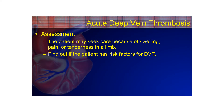A patient with a DVT may seek care because of swelling, pain, and tenderness in the limb. Find out if the patient has risk factors for DVT. Smoking is one often overlooked factor — it causes polycythemia because of chronic hypoxia, prompting the body to produce more erythropoietin and create more red blood cells, resulting in thicker blood that increases venous stasis.